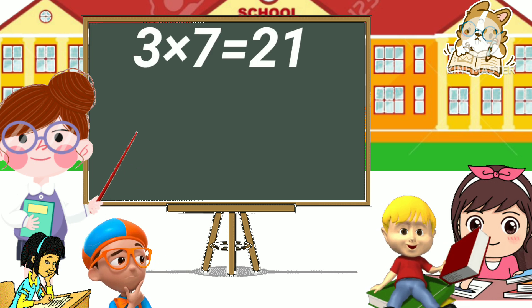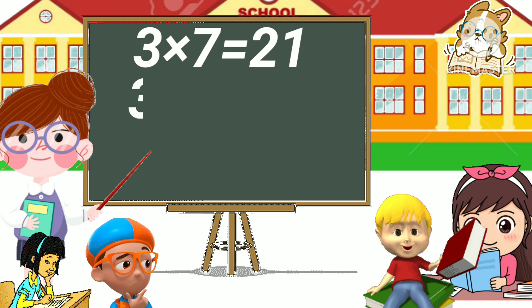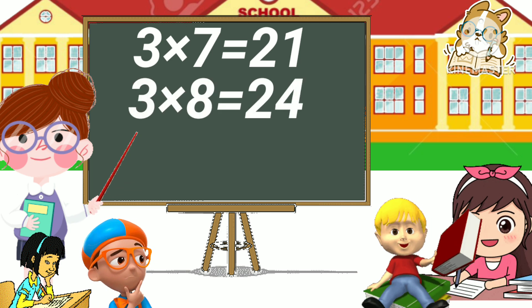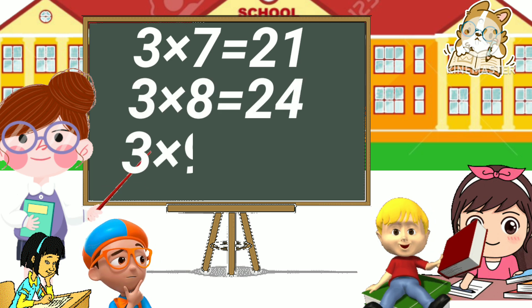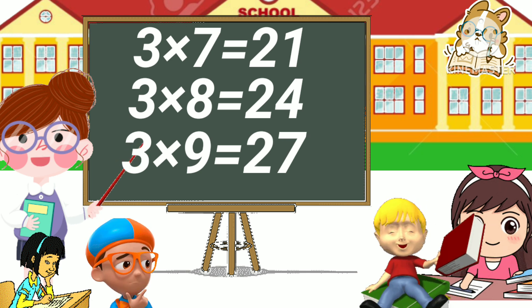Three seven has twenty-one, three eight has twenty-four, three nine has twenty-seven.